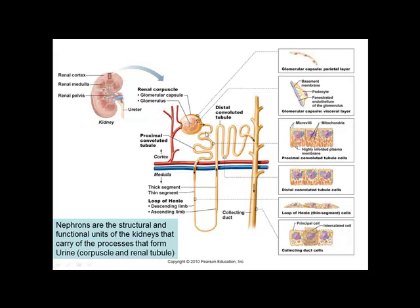Reviewing the flow: arcuate artery → cortical radiate artery → afferent arteriole → glomerulus (strains out plasma) → glomerular capsule catches filtrate → proximal convoluted tubule → descending limb of Henle → ascending limb of Henle → distal convoluted tubule. Different cell types in each segment: the glomerular capsule has a parietal layer and a visceral layer wrapped around the glomerulus. The proximal convoluted tubule has cells with microvilli. The thin limb of Henle has simple squamous cells. Collecting ducts have cuboidal cells.